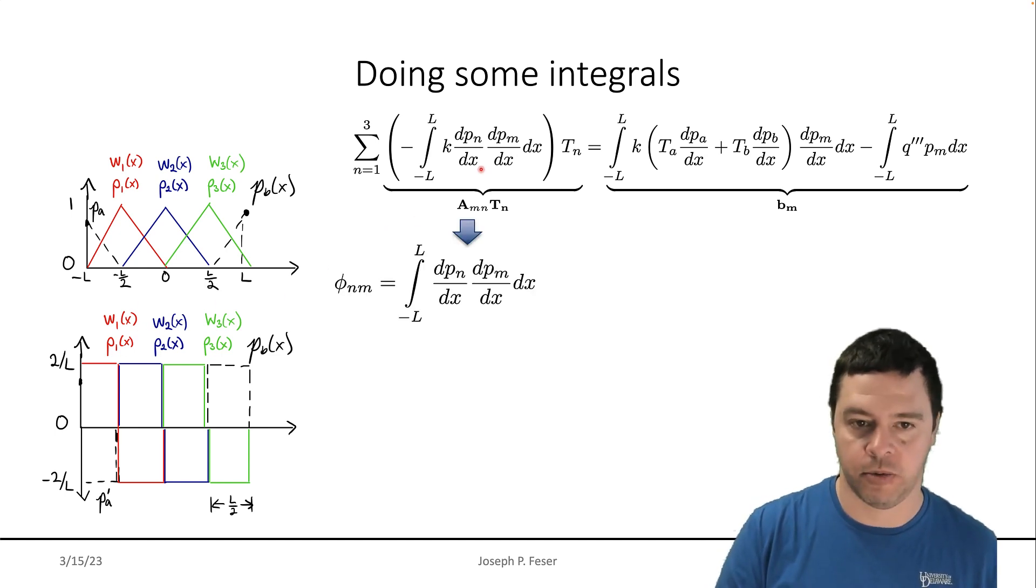So we can work those out and that means that we can actually compute that. If K is a constant, it just comes outside this integral. So we just need to be able to evaluate this integral. Now, even though this integral goes from minus L to L, the only place where any of these two functions overlap is in the case. So, for example, the piece of one only overlaps with the slope of piece of two in this region.